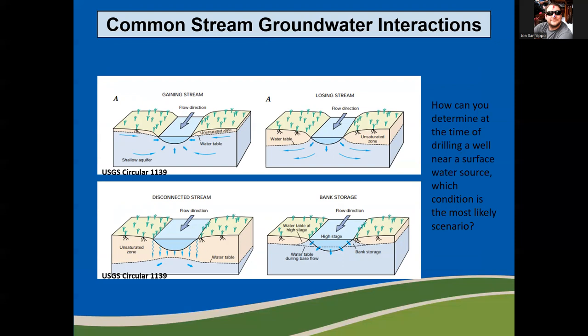On the bottom right, we have a bank storage stream. This occurs during high flows when the permeability of the banks and the stage of the stream cause an increased flow into the banks of the channel. This may continue to a point where the entire floodplain is saturated with water.